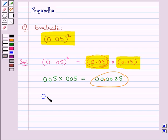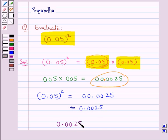So thus we say that 0.05 whole square is equal to 0.0025 or we say that this is equal to 0.0025. So final answer is 0.0025.